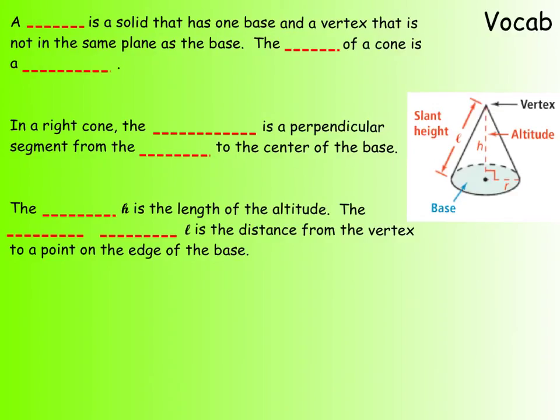We have some more vocab here because now we're moving away from pyramids. We're looking at cones. A cone is a solid that has one base and a vertex that is not in the same plane as the base. So it's going to be this ice cream cone looking thing. The base of a cone is always going to be a circle. In a right cone, the altitude is a perpendicular segment from the vertex to the center of the base. So this is all very similar so far to the pyramids we were just looking at, except now we have a circular base instead of some polygon.